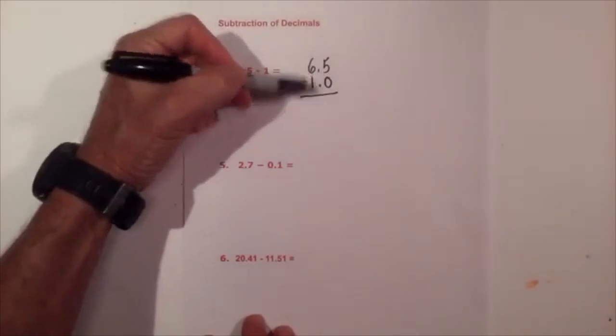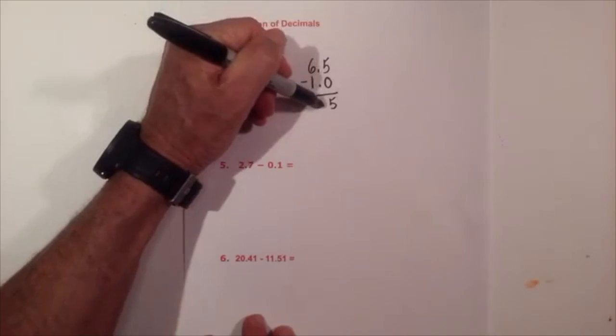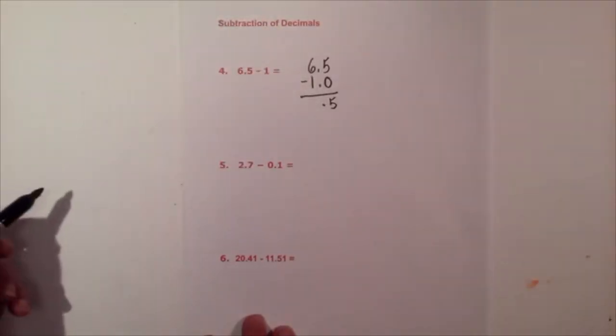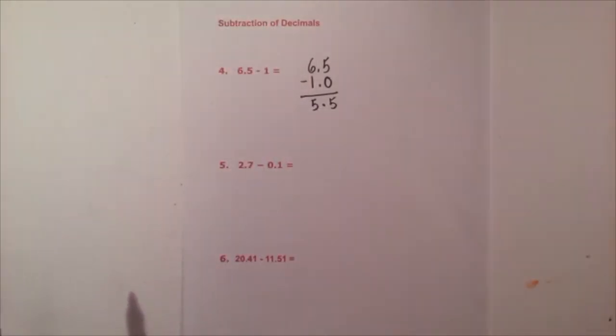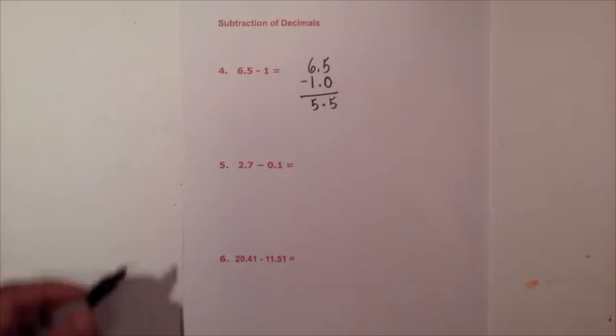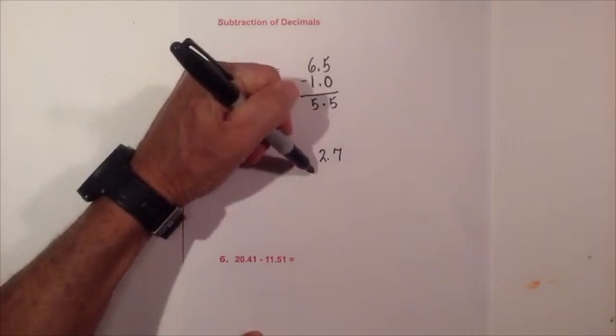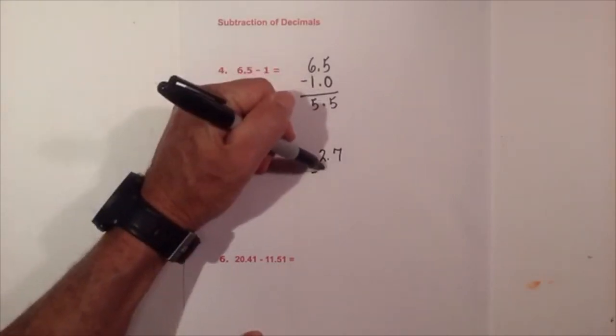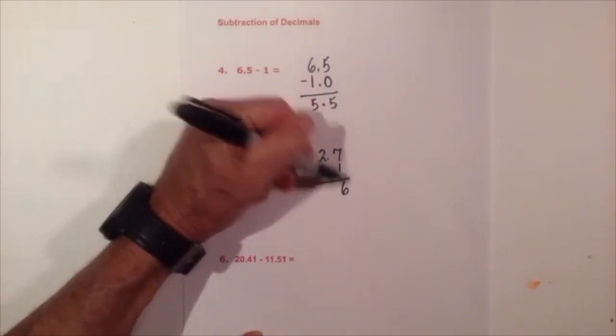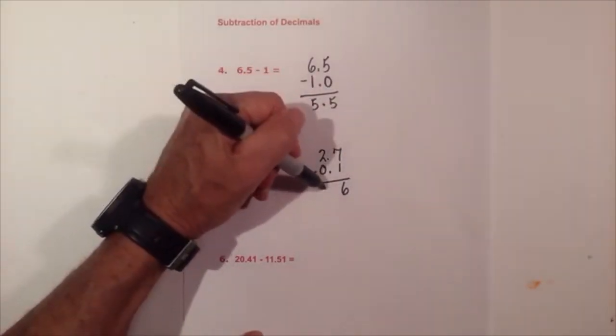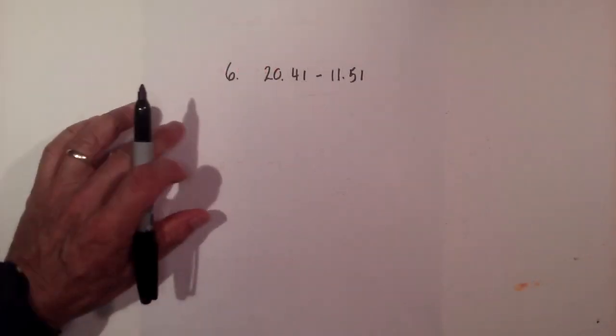Notice again the decimals are lined up. So now 5 minus 0 is 5, bring down the decimal. 6 minus 1 is 5, so it is 5.5. Now let's do the next one, we have 2.7, we are going to line up the decimals minus 0.1. Now subtract normally, 7 minus 1 is 6, 2 minus 0 is 2, so it becomes 2.6.